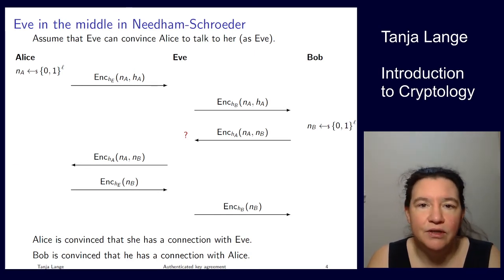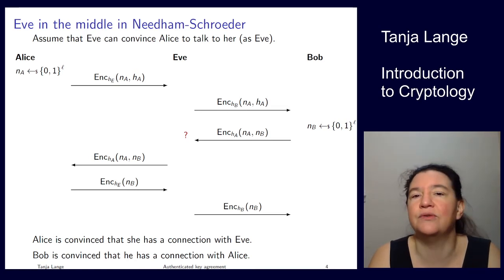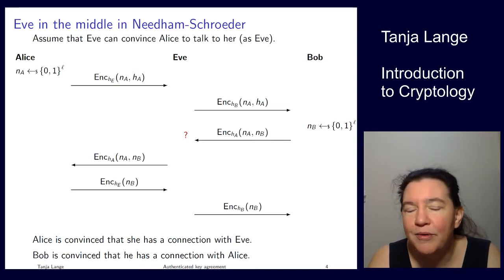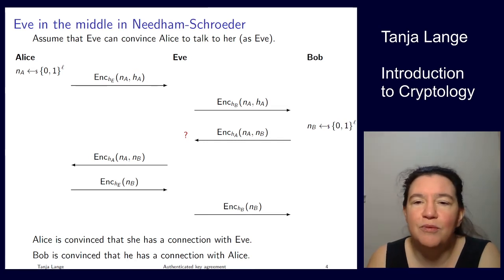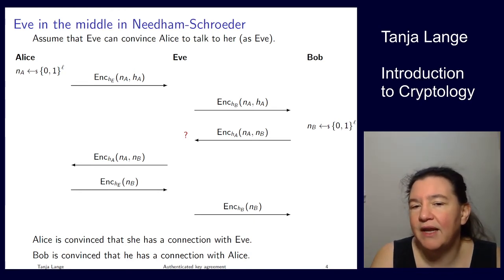You can think about how you can patch it. For instance, you could include that, hey, this is a message from Bob. And then Eve would not, then Alice would not reply to Eve, but go like, hey, I don't have a connection open with Bob. Where does this come from? But it's interesting that this protocol, which looked pretty okay to begin with, actually has this big flaw that Eve can get in the middle.